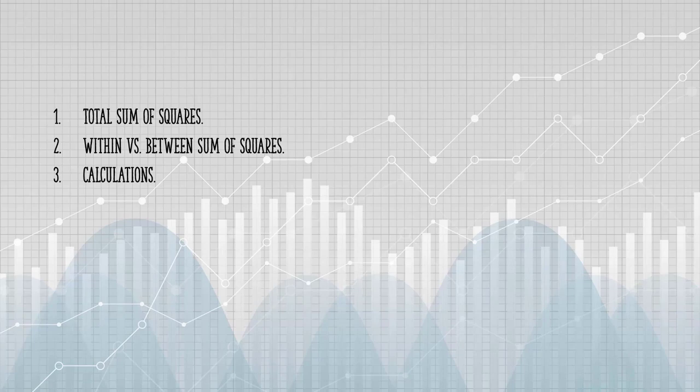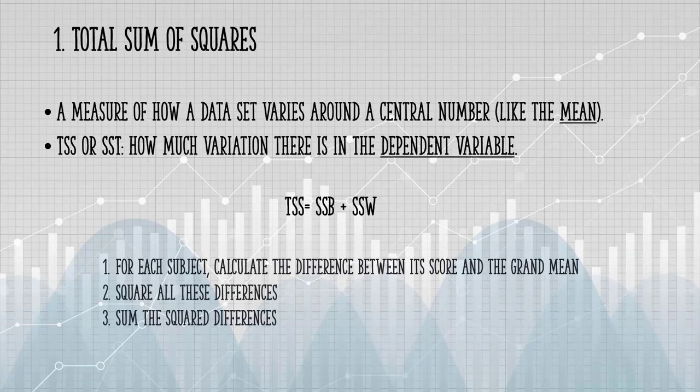In this video, I'll define the total sum of squares, the differences between within versus between sum of squares. I'll also show you how to calculate all three. The total sum of squares is a measure of how a data set varies around a central number like the mean.